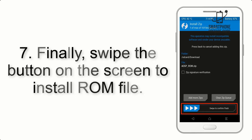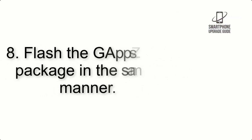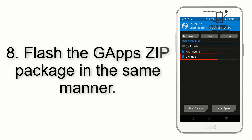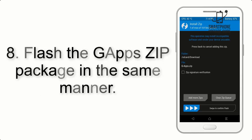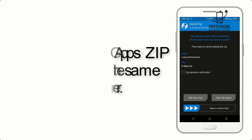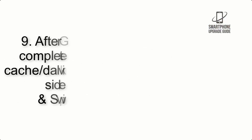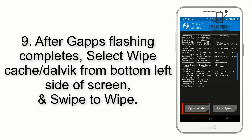Step 7: Swipe the button on the screen to install the ROM. Step 8: Flash the GApps zip package in the same manner.